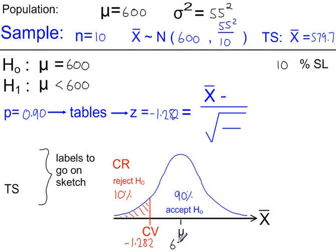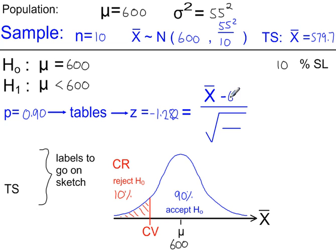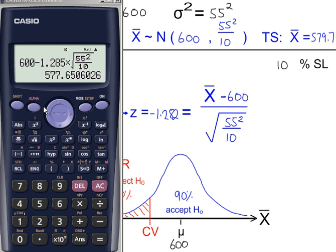The mean was 600. Now we're going to use this Z value — the critical Z value — to work out the critical sample mean. In the standardising formula, the population mean goes here, divided by the standard deviation. We have the variance, which is 55 squared over 10, so we need to square root it to get the standard deviation. Rearranging this gives our critical value as 577.7.